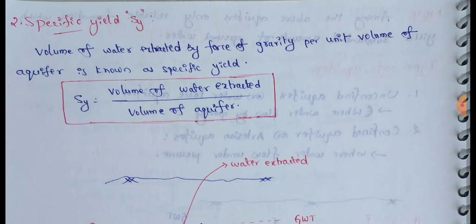Volume of water extracted by gravity per unit volume of aquifer is known as specific yield. Specific yield Sy equals volume of water extracted divided by volume of aquifer. If you know the aquifer volume, you can extract a percentage given by the value of specific yield.